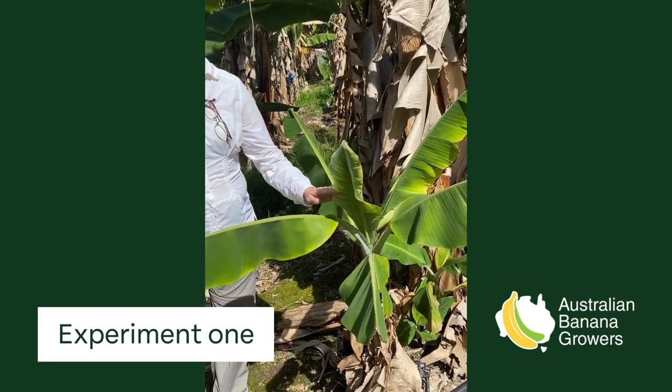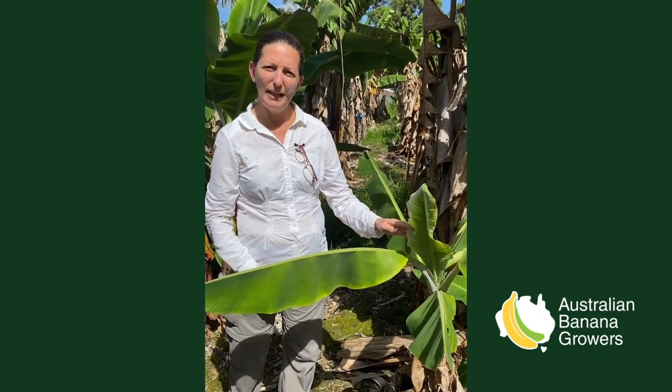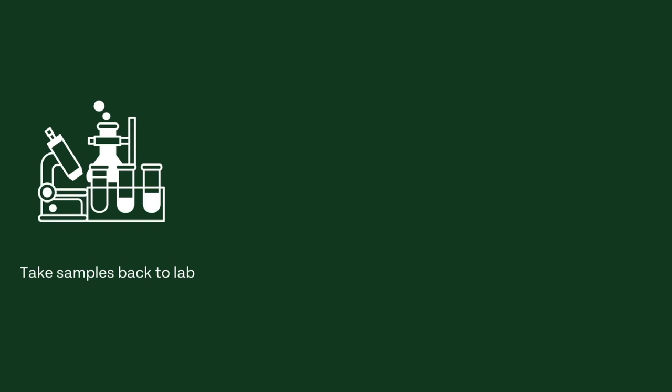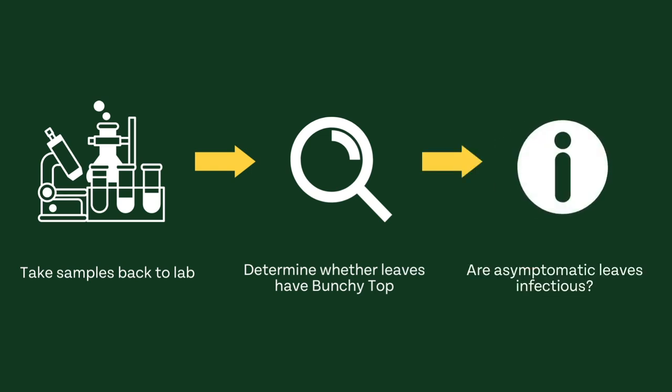We collect symptomatic leaf material and we also collect samples from lower leaves that are asymptomatic. We take them back to the lab and test them using a diagnostic assay to determine whether they have bunchy top in each leaf or not. From there we can know whether asymptomatic leaves are infectious because they have detectable virus in them.